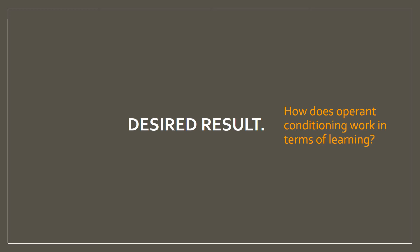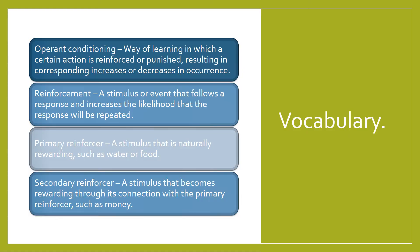Our desired result: how does operant conditioning work in terms of learning? Some vocabulary: operant conditioning is a way of learning in which a certain action is reinforced or punished, resulting in corresponding increases or decreases in occurrence. Reinforcement is a stimulus or event that follows a response and increases the likelihood that the response will be repeated. A primary reinforcer is a stimulus that is naturally rewarding, such as water or food. A secondary reinforcer is a stimulus that becomes rewarding through its connection with the primary reinforcer — this could be money.